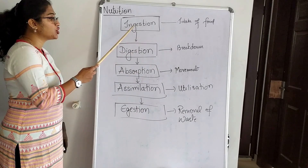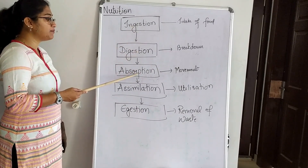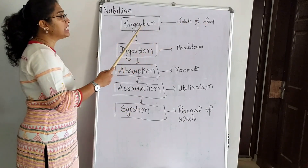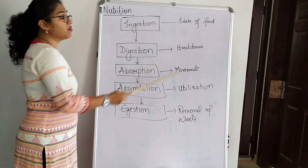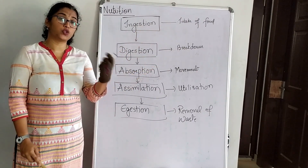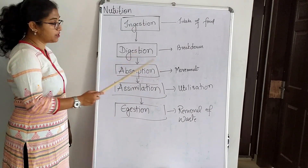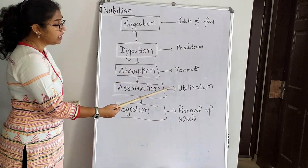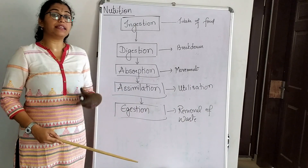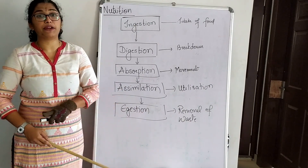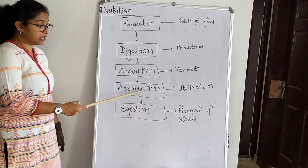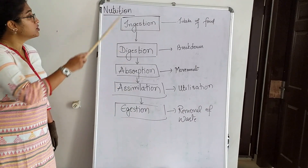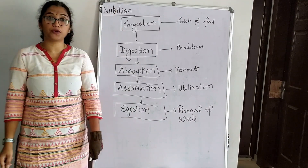A unicellular organism like amoeba utilizes different processes for nutrition: ingestion — intake of food; digestion — breaking down complex food molecules into simple molecules; absorption — movement of digested food in the body; assimilation — utilization of food for various activities in the body; and egestion — removal of waste particles from the body.